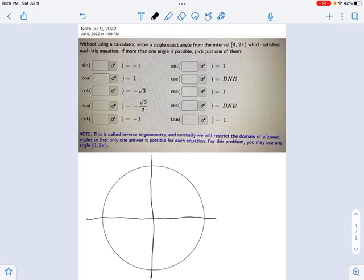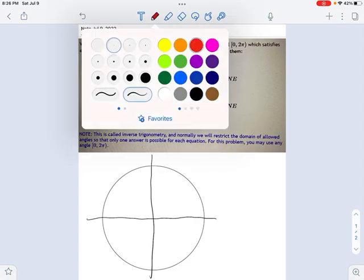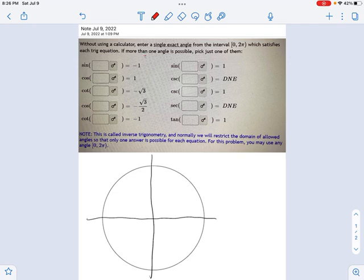Okay, now we're going backwards, meaning I tell you something a little bit differently phrased. I say, the sine of some angle is negative 1. What was that angle?